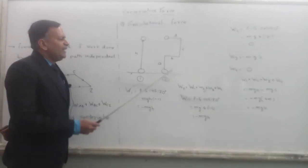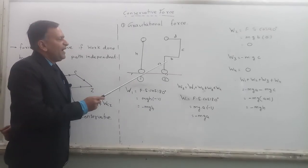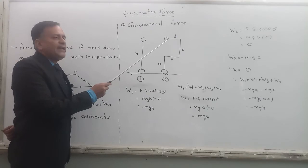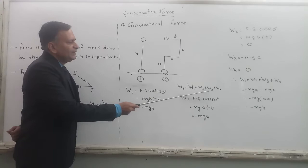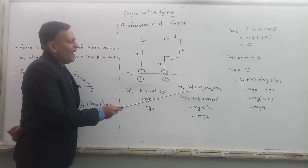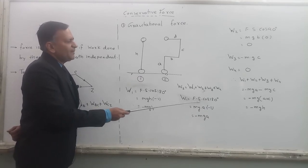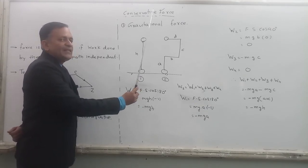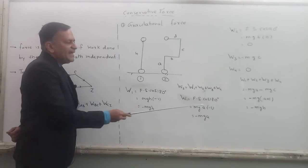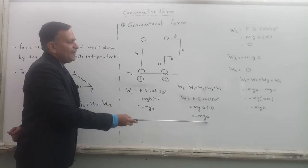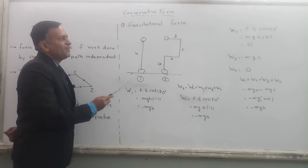Now calculating the work done through a different path. This path is divided into four different paths A, then B, then C, and then D. Let us find the work done through all these paths 1, 2, 3, and 4. W1 is the work done from here to here. So what is the work done? Force into displacement cos 180. Displacement is upwards, force is downwards. The angle between them will be 180. So this is minus 1, and so the work done is minus MGA.